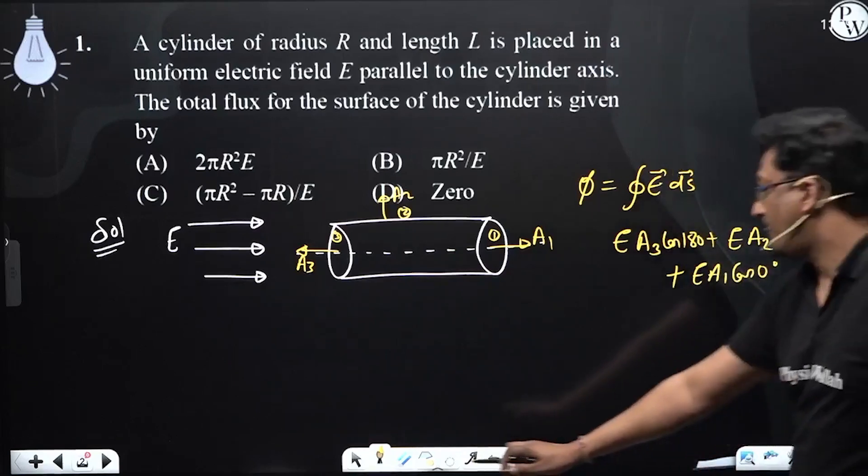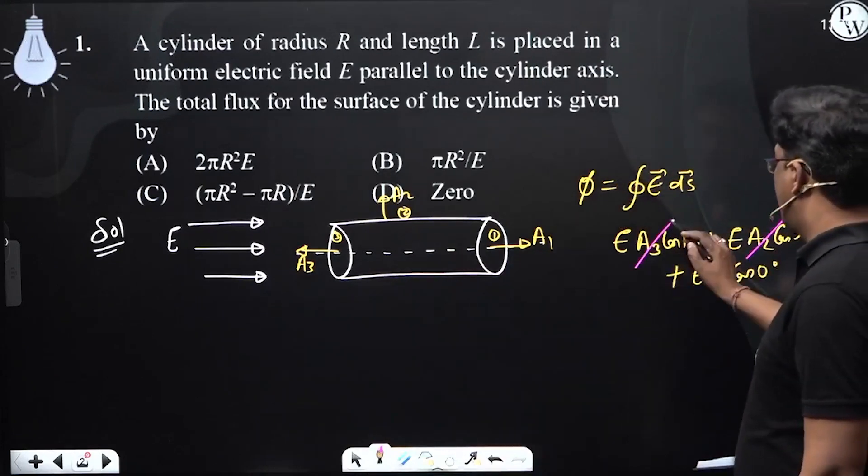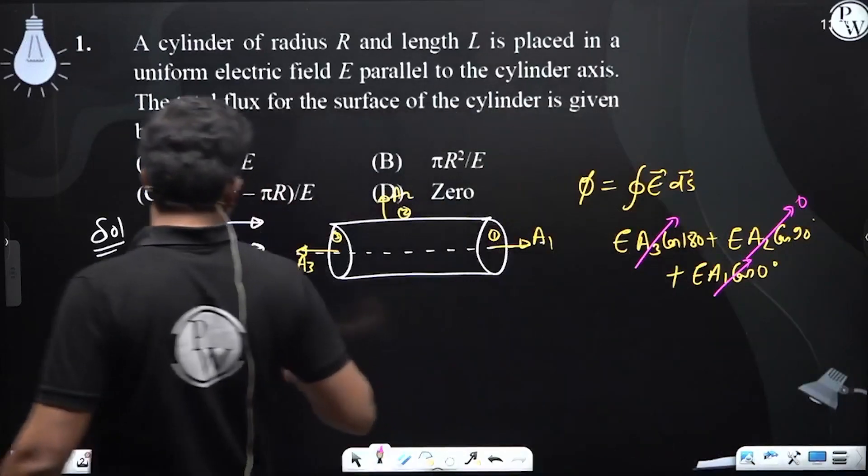Now, on calculating this, we find that this is 0 cos 90, and this one also get cancelled. So our answer for this, the net flux through the cylinder will be,